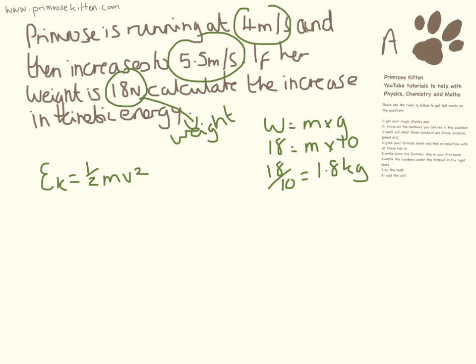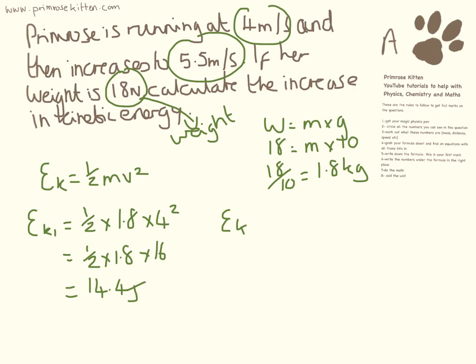So we need to find out two things after this. We need to find out how far she is running initially, how far she is running overall, and then find the difference between the two of them. So I'm going to label this as EK1 for first. That is half times mass times velocity squared. So we do the squared bit first. Half times 1.8 times 16. So that is going to equal 14.4 joules.